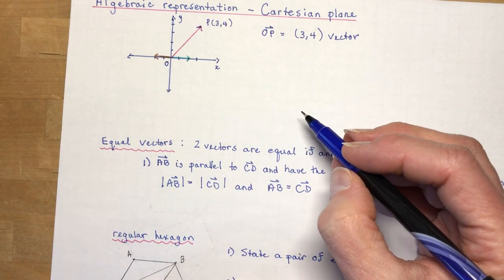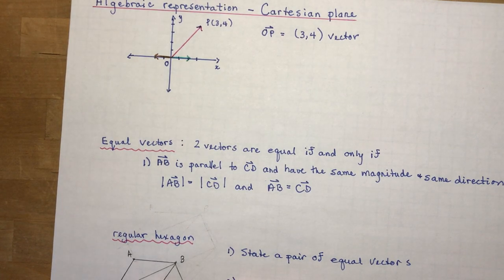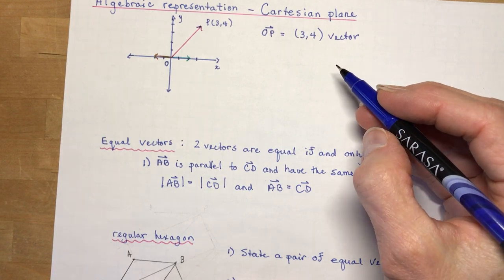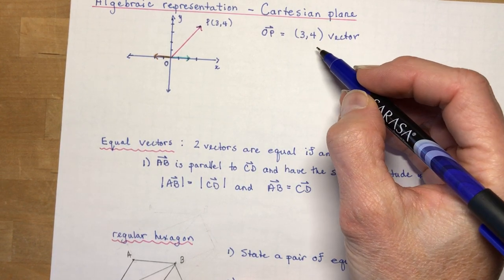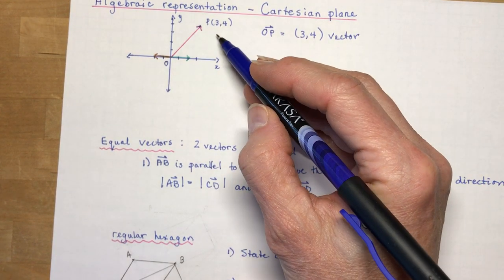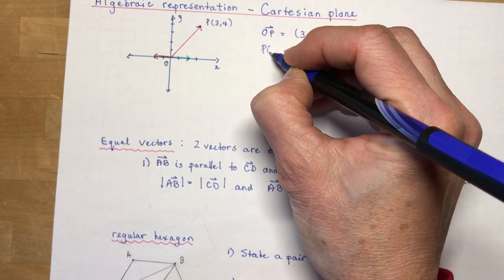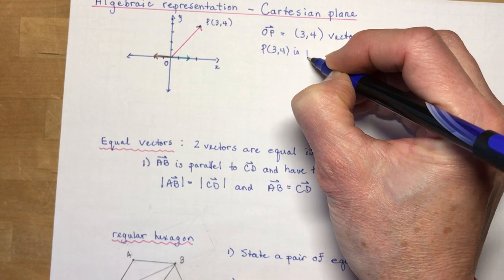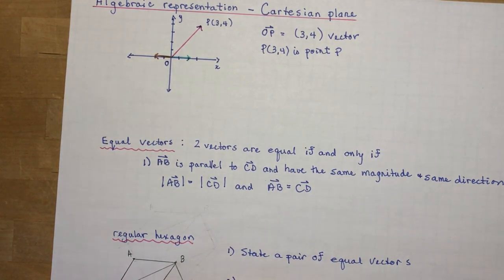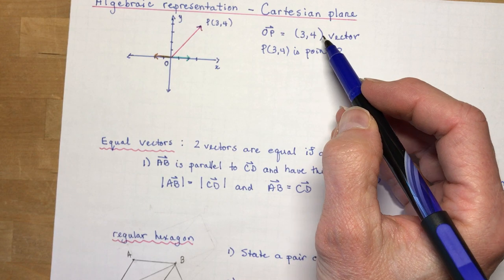And that gives you its placement on the Cartesian plane. Whereas I could say the point, now some textbooks use square brackets for vectors and round brackets for points, but once we get into just dealing with vectors we don't really make a distinction between them. We know when we're talking about a vector. So P is the point P(3,4).